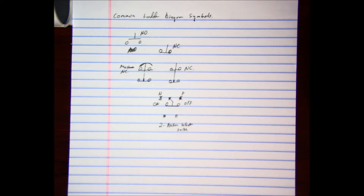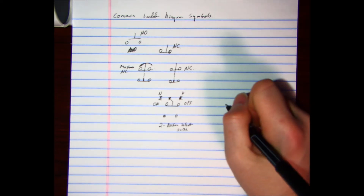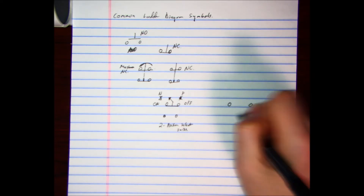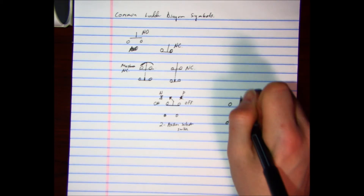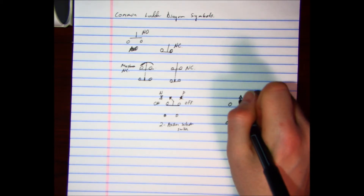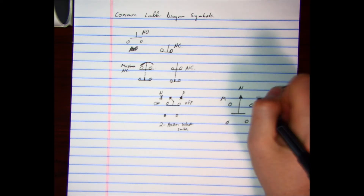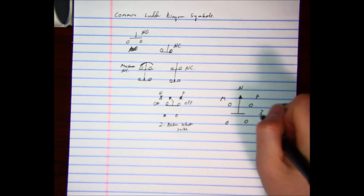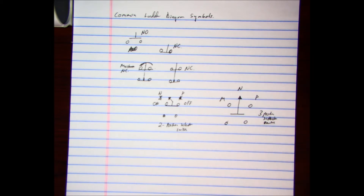The next one would be a three-position selector switch. It's virtually the same as the two-position selector switch except we're going to have four contacts and the connector goes straight up rather than angled. They'd probably label it with something like M and P. Three-position selector switch.